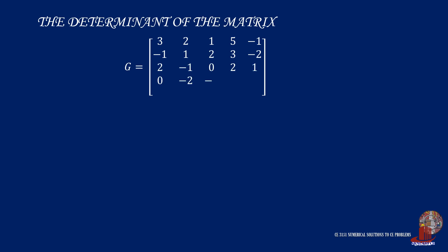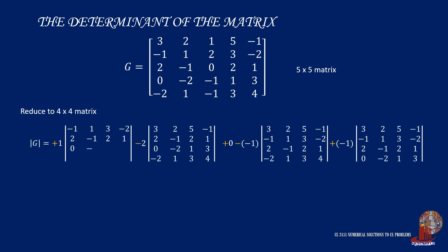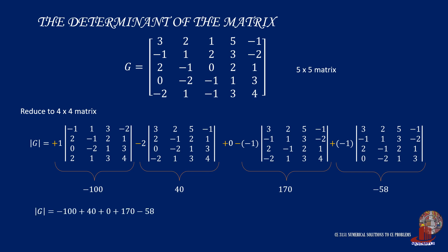Finally, we are down to finding the determinant of the 5 by 5 matrix, which we reduced into 5 4 by 4 matrices where 1 is reduced to 0. The first term has been simplified as negative 100. The second has positive 40. The third is 0. The fourth has positive 170. And the fifth yielded negative 58. Determinant G is then negative 100 plus 40 plus 0 plus 170 and minus 58 to get positive 52.